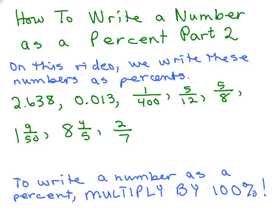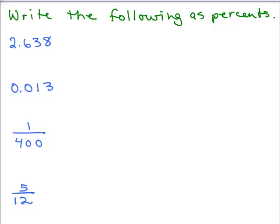This is part 2 of how to write a number as a percent. What we learned is that to write a number as a percent, you multiply that number by 100 percent. So on this video, we use that process to write the following numbers as a percent. There's nothing new - we multiply by 100 percent. This video is just to give you some more practice. Go ahead and put the video on pause and try these four problems.